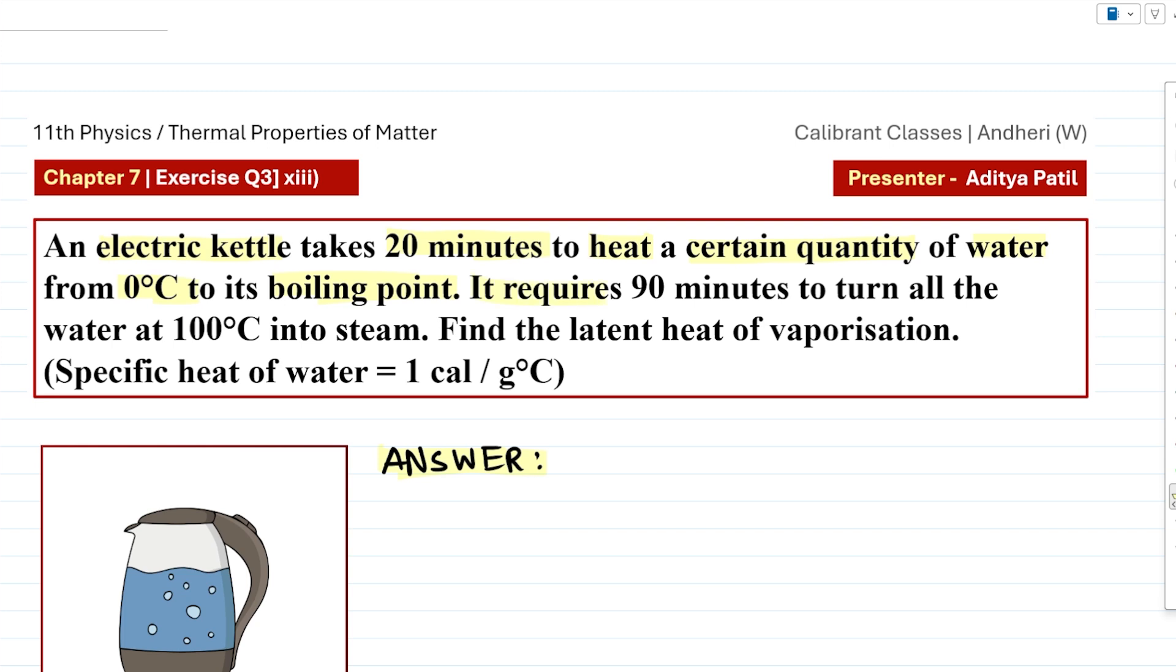It requires, meaning the kettle requires, 90 minutes to turn all the water at 100 degree Celsius into steam. Find the latent heat of vaporization in this case. Given is the specific heat of water that is 1 calorie per gram per degree Celsius.